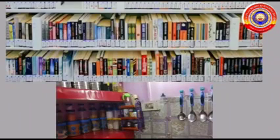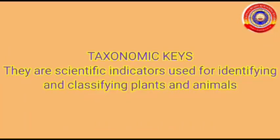We classify organisms based on their shape, color, size, and hues. Next, taxonomic keys — the taxonomic keys are the scientific indicators used for identifying and classifying plants and animals. One of the most important taxonomic keys is the dichotomous key.